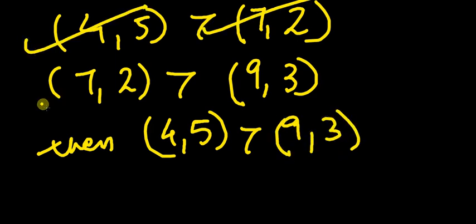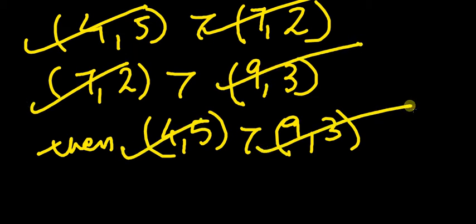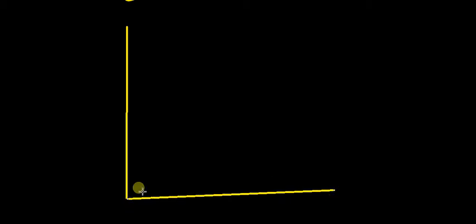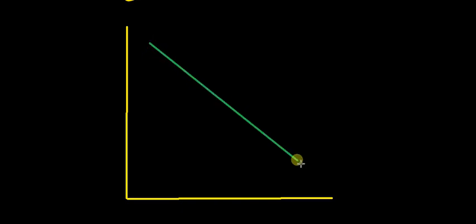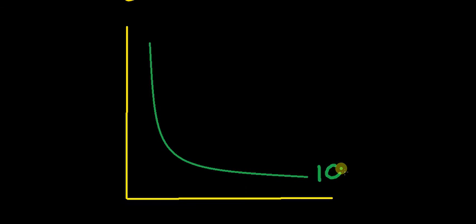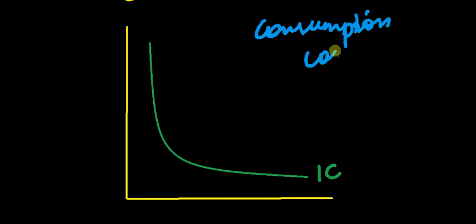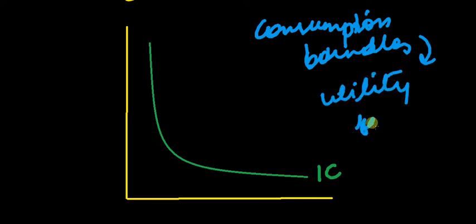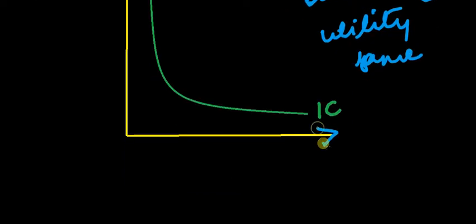So if one bundle is preferred over another, and the second bundle is preferred over a third, then the first bundle should also be preferred over the third. Now let's move on to indifference curves. An indifference curve gives you different consumption bundles such that they all provide the same utility.